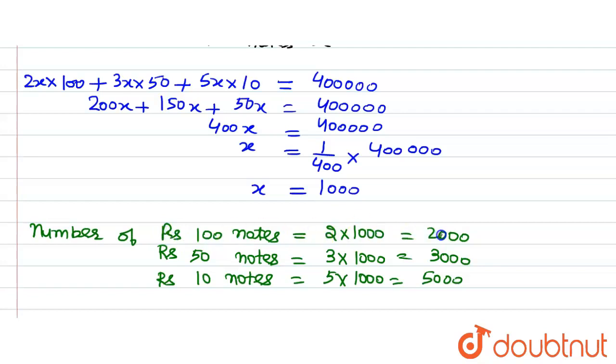So the number of notes of the different denominations are: rupees 100 notes there are 2000, number of rupees 50 notes are 3000, and number of rupees 10 notes are 5000 which Lakshmi has. Thank you.